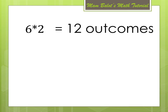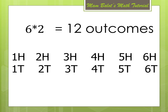And these 12 outcomes are: 1 head, 2 head, 3 head, until 6 head, and then 1 tail, 2 tail, 3 tail, and so on until 6 tail. So these are the 12 outcomes which are possible in combining tossing a die and flipping a coin.